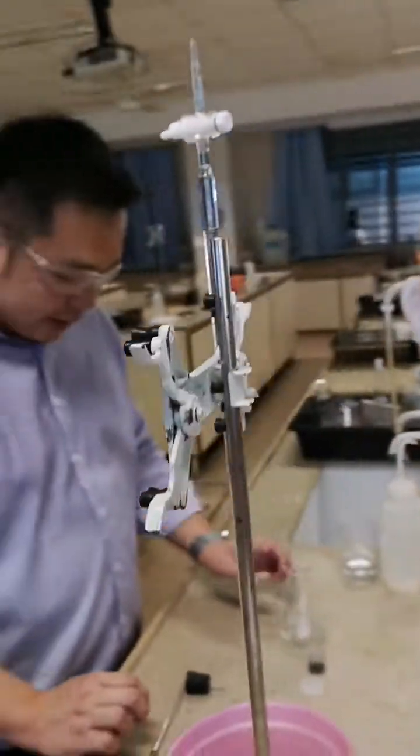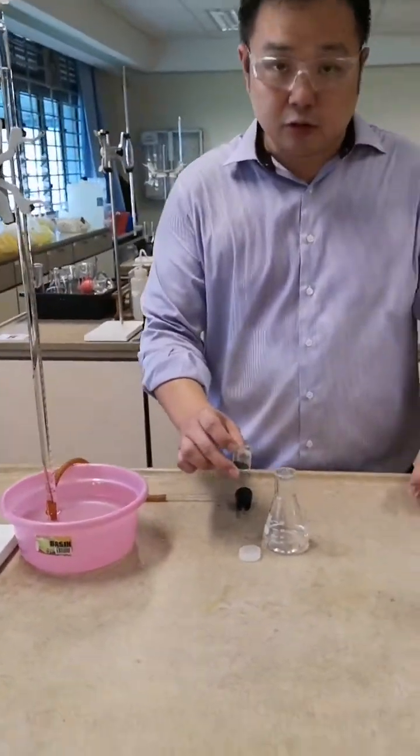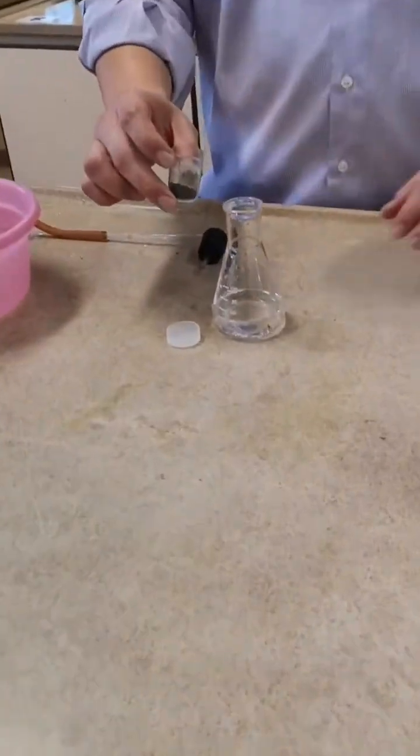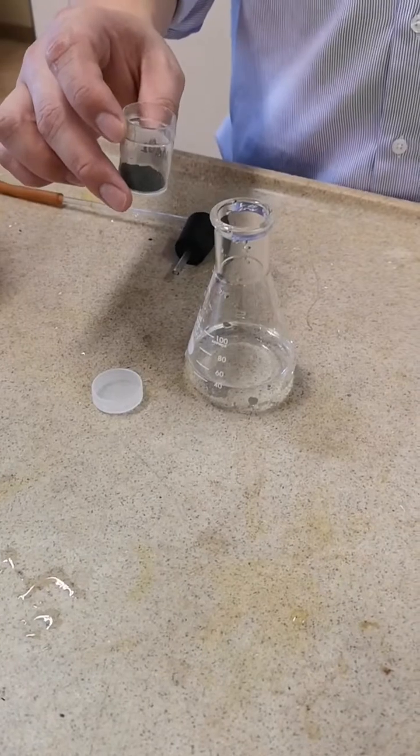As soon as you are ready, I'm going to pour in MnO2 to the hydrogen peroxide in the conical flask. This will start the decomposition of hydrogen peroxide to form oxygen gas and water.